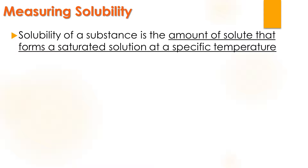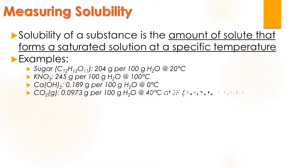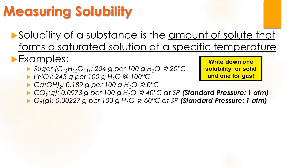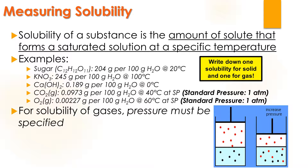We can measure solubility as the amount of a solute that forms a solution at a specific temperature. For solids: sugar is 204 grams per 100 grams of water at 20°C, or calcium hydroxide is 0.189 grams per 100 grams at 0°C. Note that temperature is always included. For gases, you also have to include the pressure. These gas examples are at standard pressure, aka one atmosphere. When you increase pressure, solubility changes — so make sure you are marking down the pressure when dealing with gases.